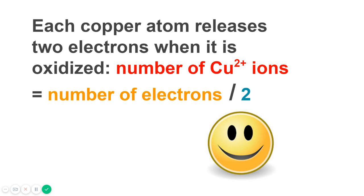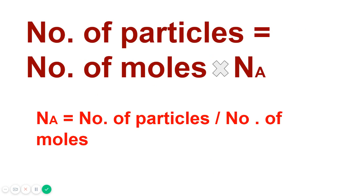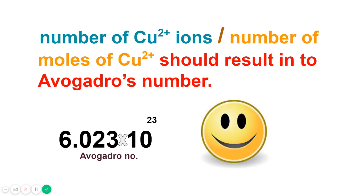Each copper atom releases two electrons when it is oxidized, so the number of Cu²⁺ ions equals the number of electrons divided by two. The moles of copper ions can be found using: moles = given mass / atomic mass, where the given mass is the initial anode mass minus the final anode mass, divided by the atomic mass of copper. Since number of particles = moles × Avogadro's number, Avogadro's number = number of copper ions divided by moles of Cu²⁺ ions, giving 6.02 × 10²³.